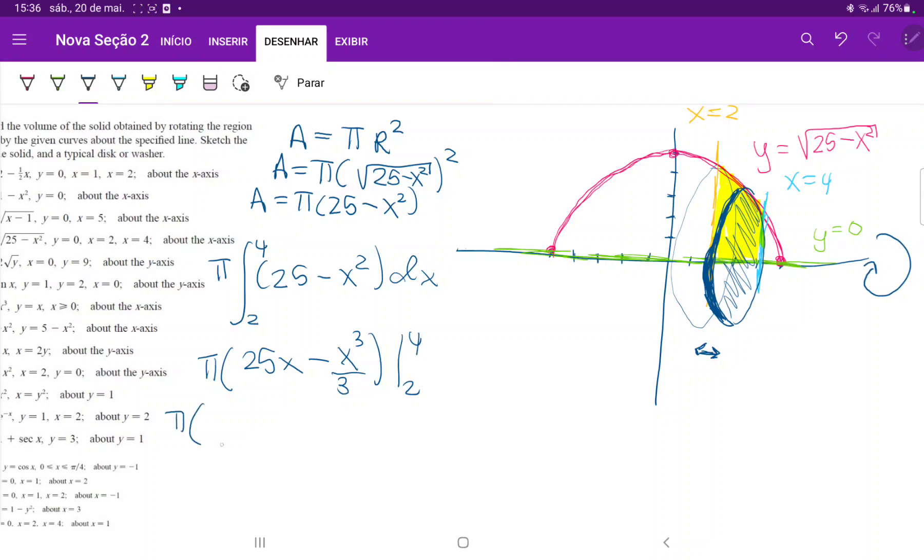So pi times 25 times 4 is 100 minus 4 cubed, so 64 over 3. And then minus the lower boundary, right? So minus 25 times 2 is 50. And then minus minus is a plus, plus 2 to the power of 3 is 8, so 8 thirds.